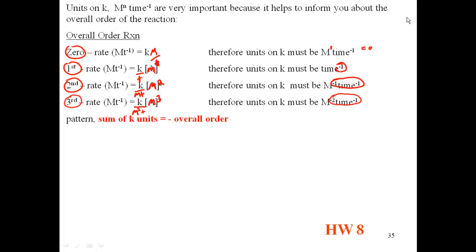What we're getting here is there's a pattern happening here. The pattern is the sum of your K units equals the negative overall order. The sum of the K units equals the negative overall order. Or another way of looking at it, negative of your sum of your K units equals the overall order.